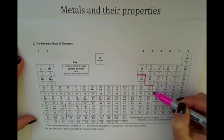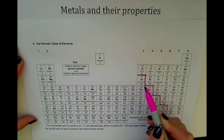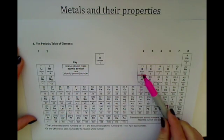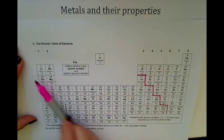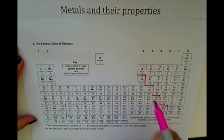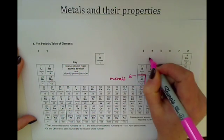To separate the metals, which are on the left-hand side of this line, so everything to the left-hand side of the line is a metal and non-metals to the right. Metals over here and non-metals on the right.